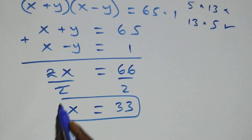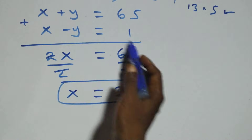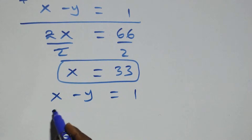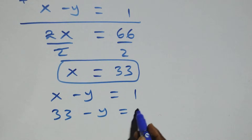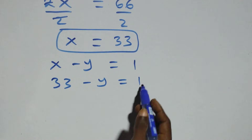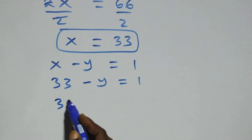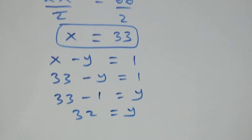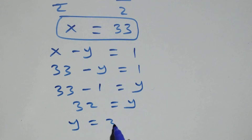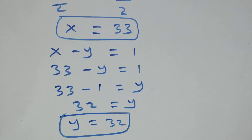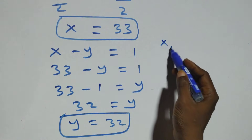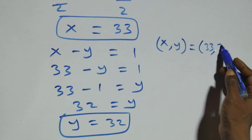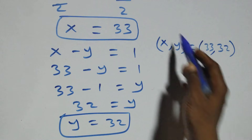So x equals to 66 over 2, which is 33. Then we get the value of y using the second equation, x minus y equals to 1. Substituting: 33 minus y equals to 1, so y equals to 33 minus 1, which is 32. Therefore y equals to 32. We write the solution as (x, y) equals to (33, 32). This is the first solution.